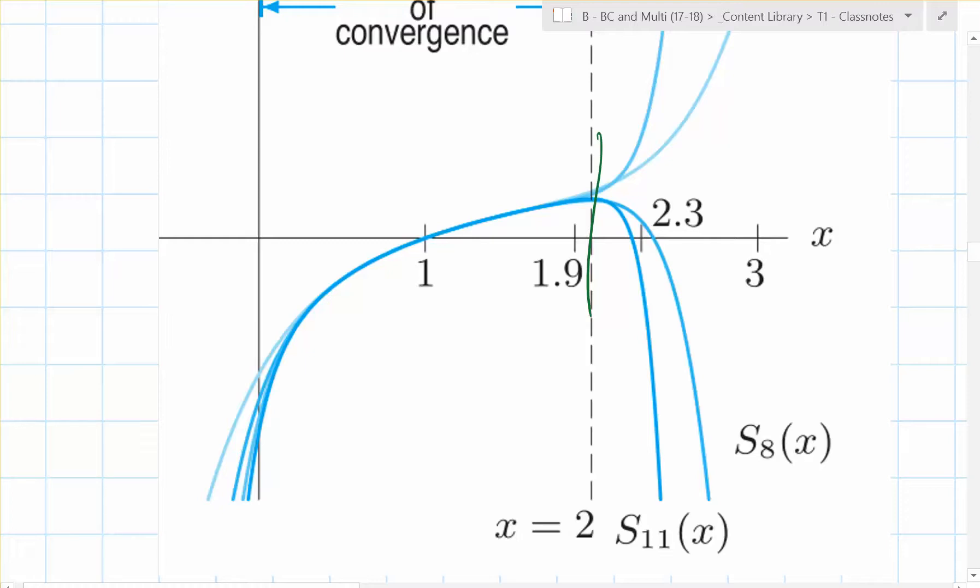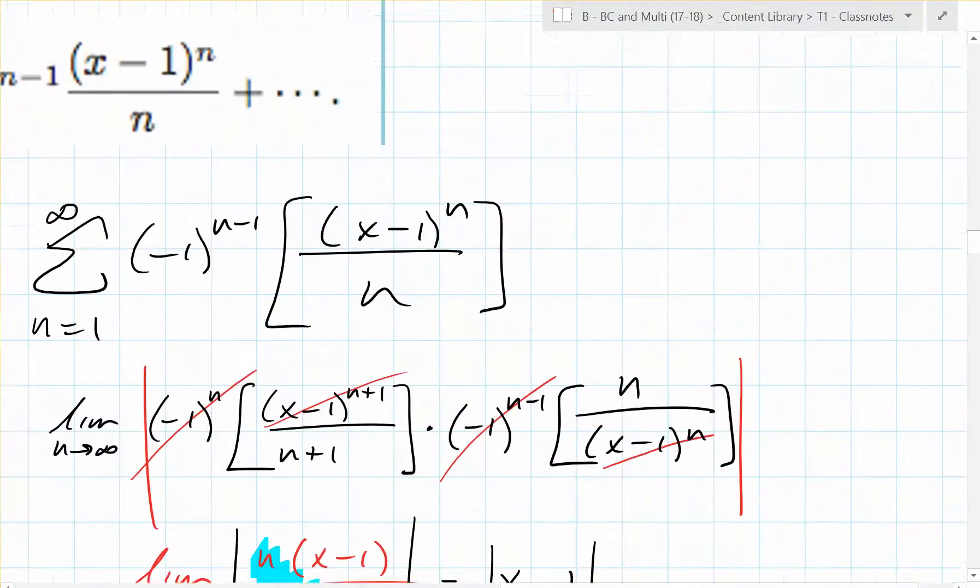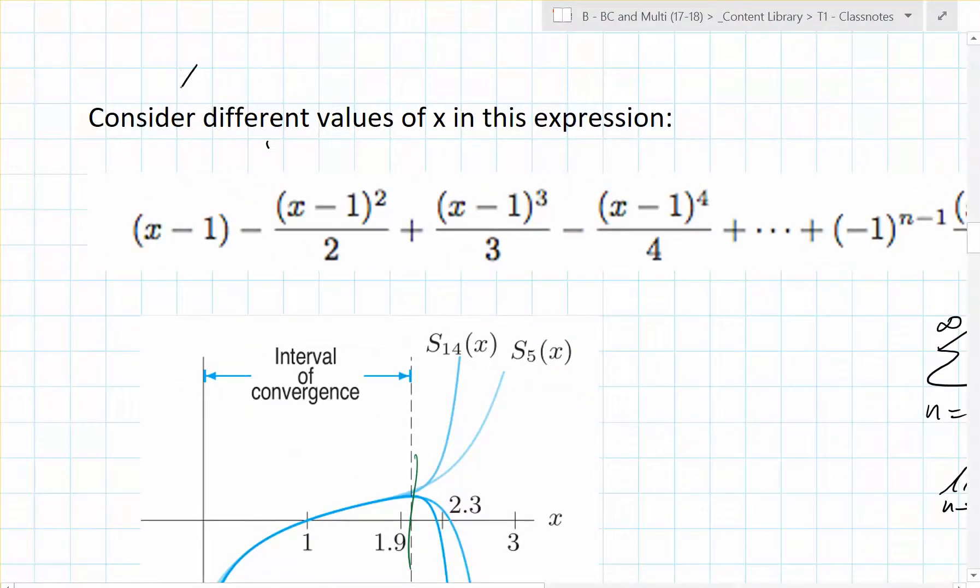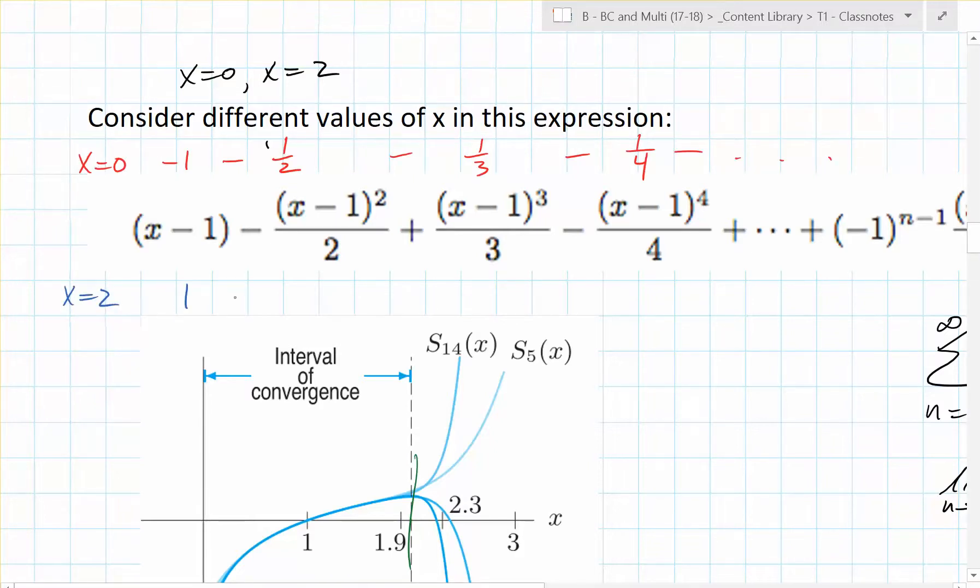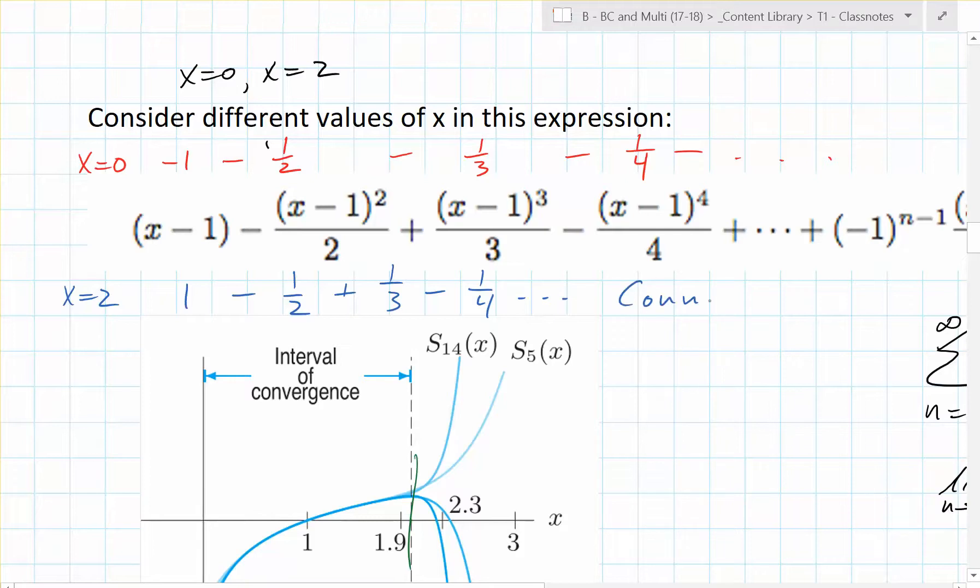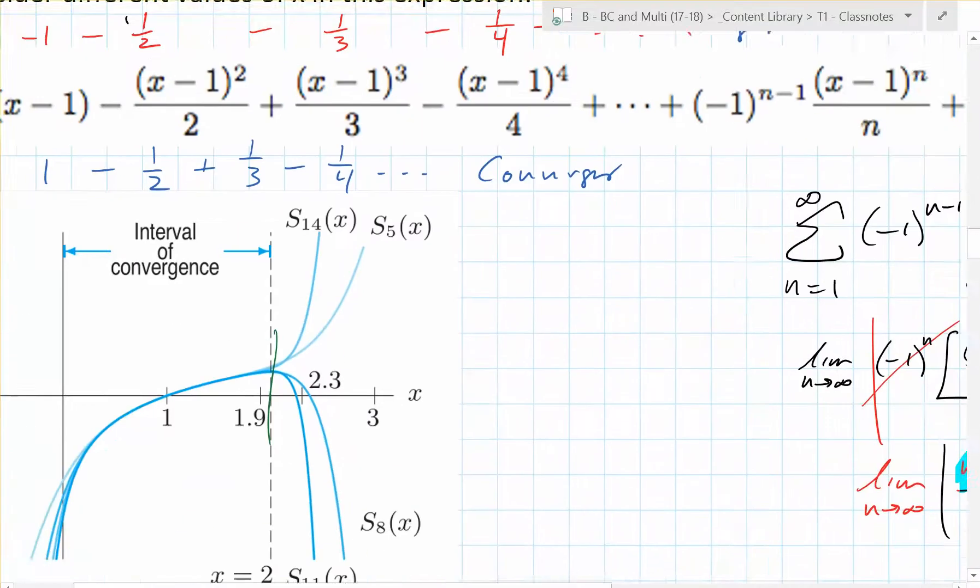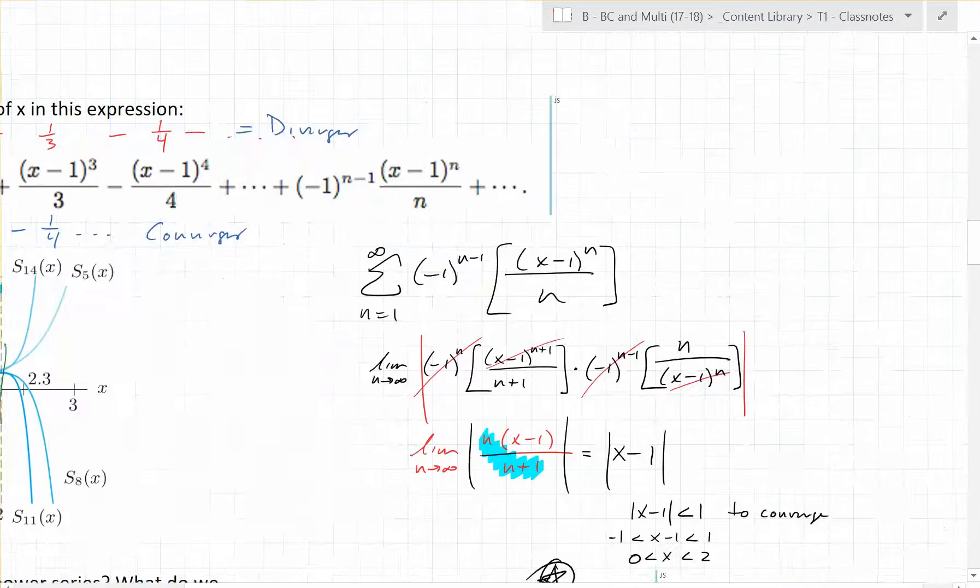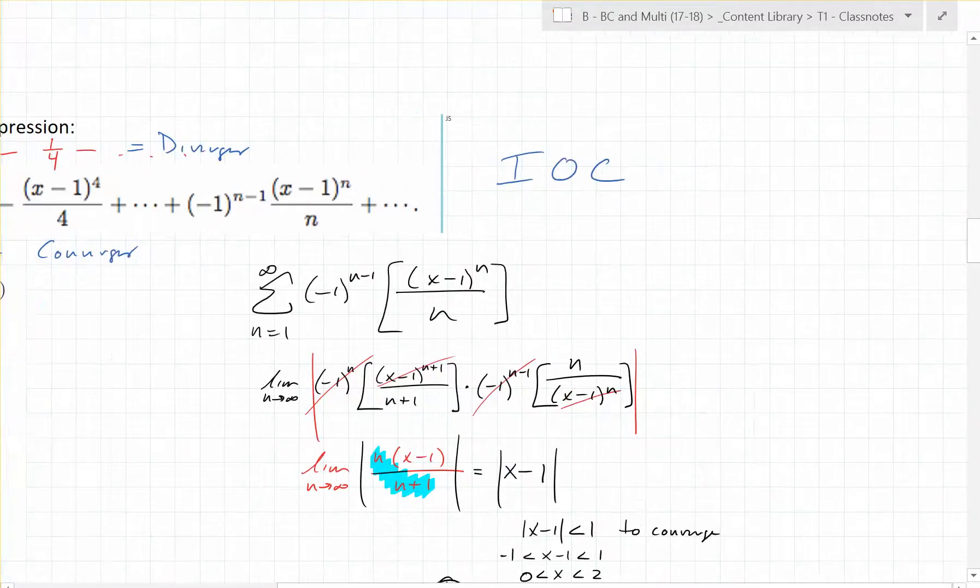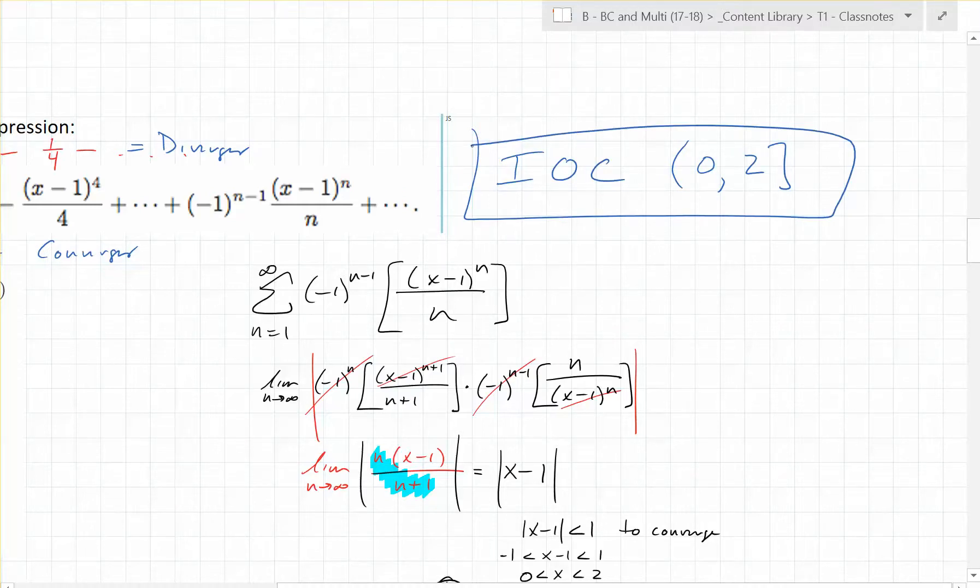We need to test x being 0 and x being 2. Let's plug in 0. If x is 0, what happens when x is 2? This is alternating harmonic. Does that converge? So this converges. What about this one? Diverges. So the interval of convergence for this would be not containing 0 but containing 2. This would be the proper answer for the interval of convergence.